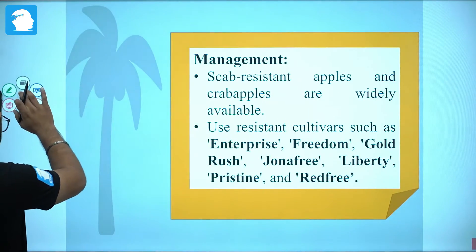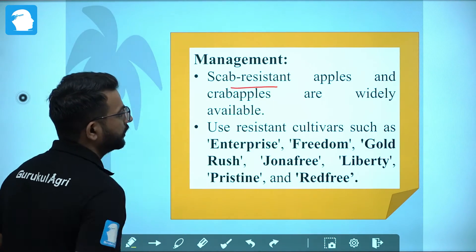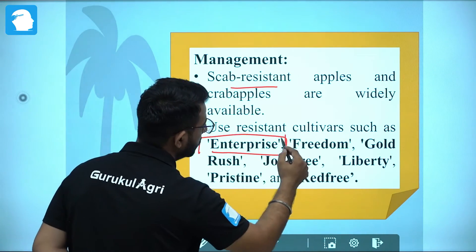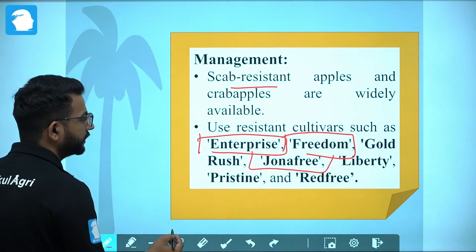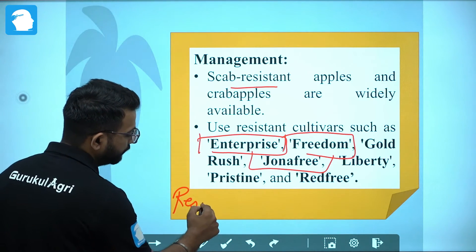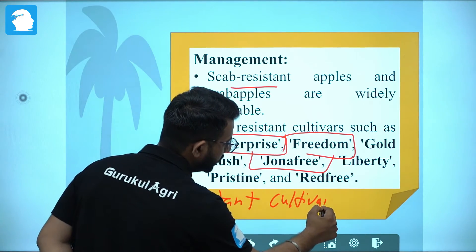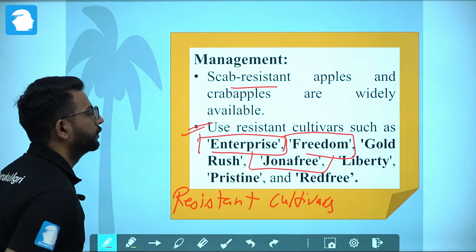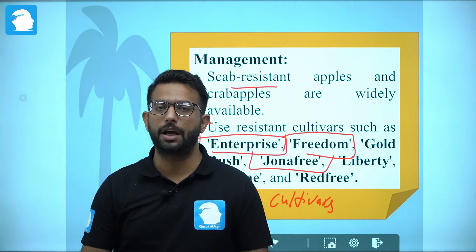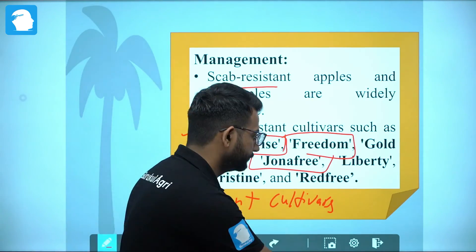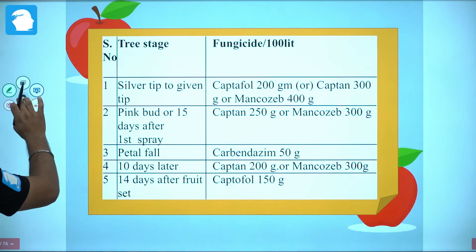For management, we use resistant varieties such as Enterprise, Freedom, Gold Rush, Jonafree, Liberty, and Redfree. Using resistant cultivars is important — you need to memorize all of them. These cultivars provide prevention and resistance against apple scab caused by Venturia inaequalis.